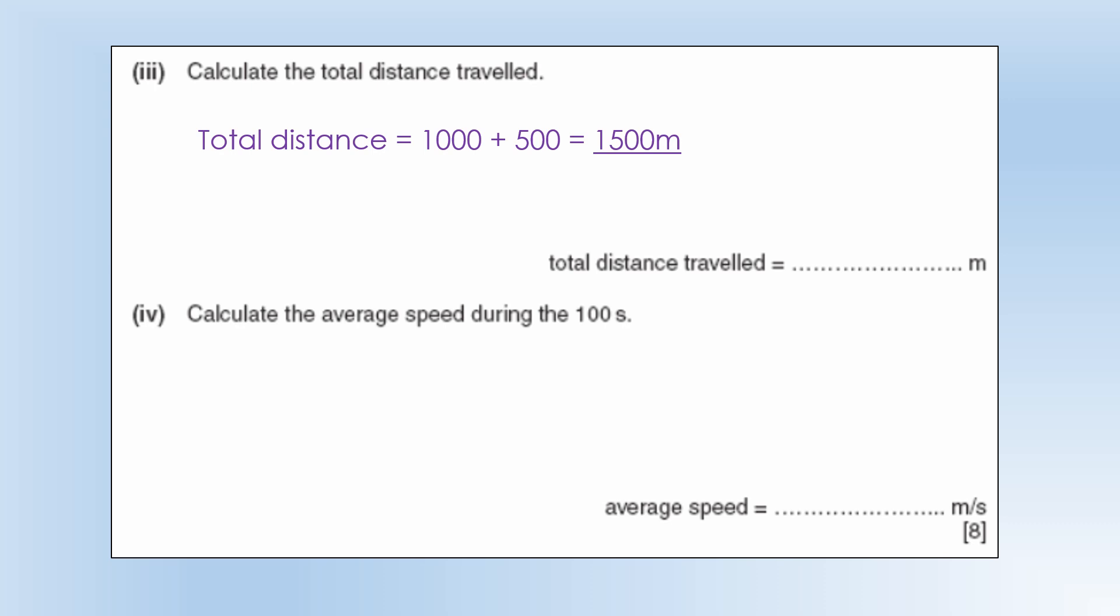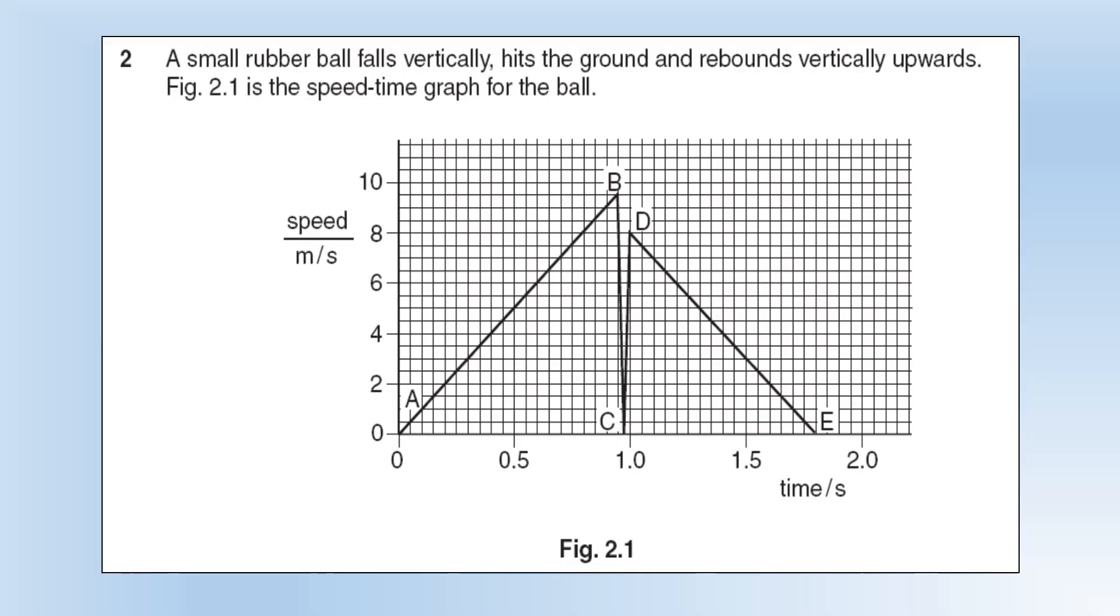Calculate the average speed during the 100 seconds. We know it traveled 1500 meters in 100 seconds, so it must have been 15 meters per second. A small rubber ball falls vertically, hits the ground and rebounds vertically upwards. The diagram is a speed-time graph for the ball. We've got constant acceleration from A to B, then the speed drops to zero and goes back up again - so that's hitting the ground at that point. B, C, D is it hitting the ground and bouncing back up. Then D to E is constant deceleration as it goes upwards again.